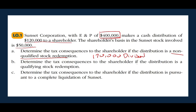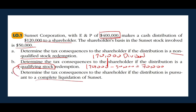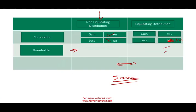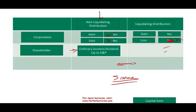If the distribution is a qualifying stock redemption, it's treated like a sale or exchange. You received $120,000 and your basis was $50,000, therefore you have a capital gain of $70,000. For a complete liquidation, the same result applies: $120,000 minus $50,000 equals $70,000, treated as a capital gain. Refer to the capital gains chapter for how that gain is taxed.